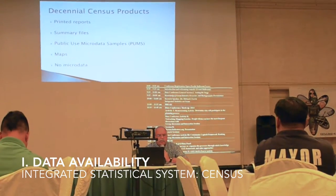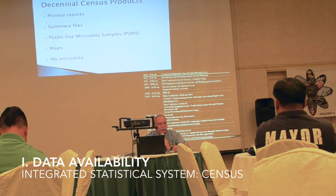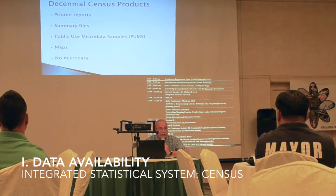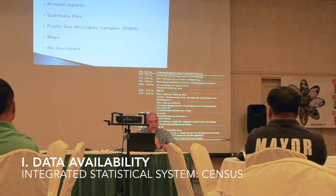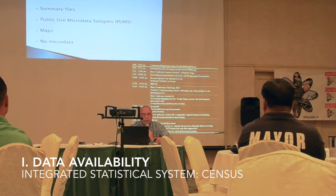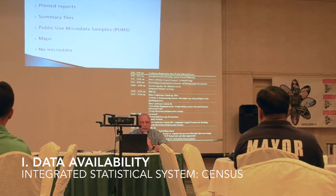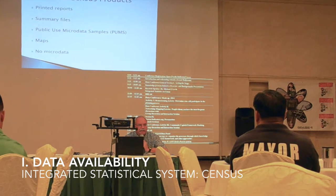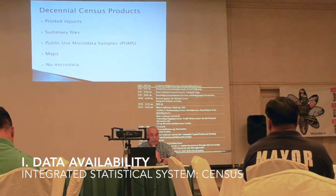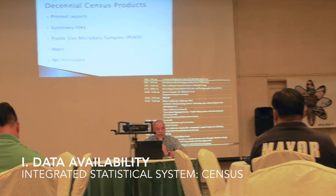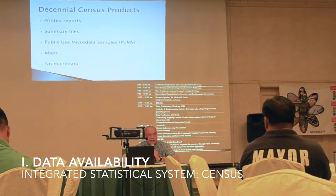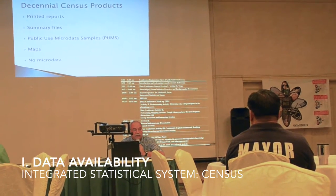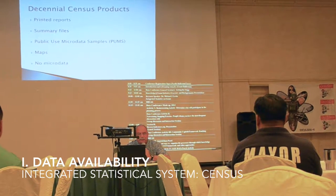You get something called PUMS — a public-use microdata sample. If you were a state, you'd get a 5% sample. Here, you get a 10% sample, shared with the Virgin Islands. But the problem with your 10% sample is there's nothing lower than the whole island block — you can't get any village-level data from the PUMS. However, if you're doing regression analysis and multivariate analysis, you'll have a dataset, and you can look at how one variable is related to another variable. It's good for students.